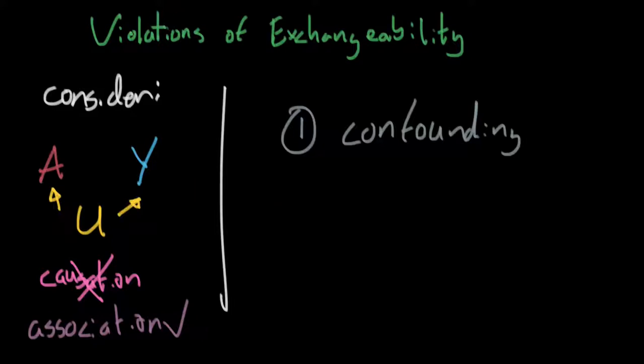There's many different ways we can get common causes. But we will see later on, if we simply condition upon this common cause, A and Y are no longer related, which is the true causal effect, because there's no causation. So we'll see how we can deal with confounding in observational studies later on.